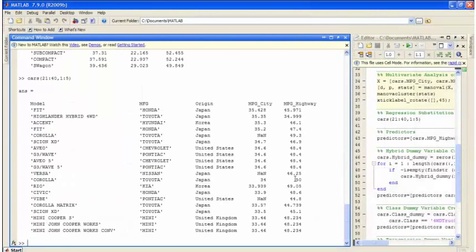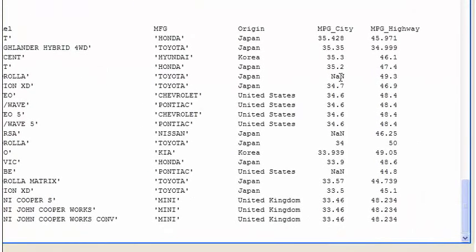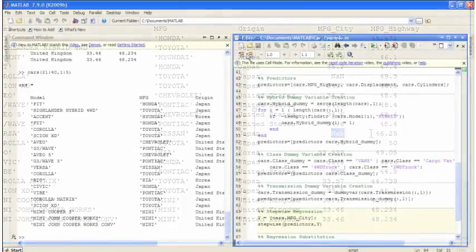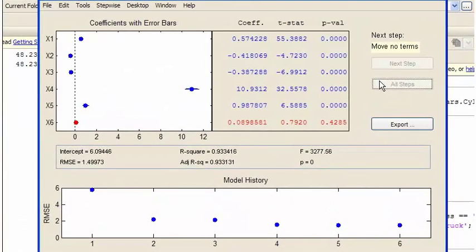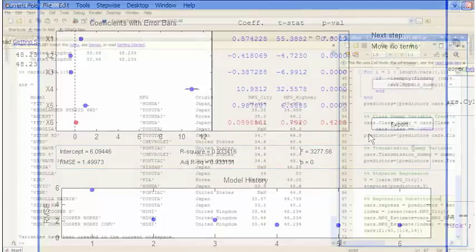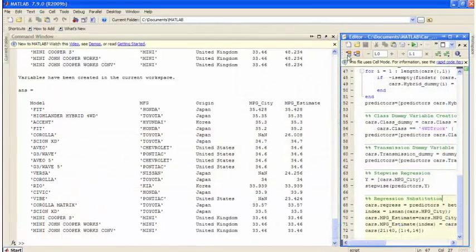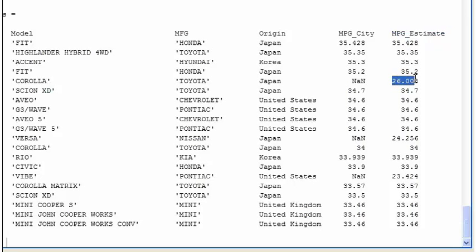Regression is a critical and commonly used tool for fitting data, or replacing missing data, such as the NANs in this dataset's city miles per gallon column. This example uses the stepwise regression tool. The tool suggests that five of the six variables have a statistically significant effect on the regression model. The variable describing the type of transmission, shown in red, doesn't improve the performance of the model. Metrics such as R-square values show you how well the model fits your data. This final result shows the NANs replaced with city miles per gallon data estimated from the regression model.